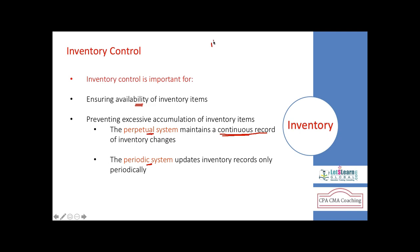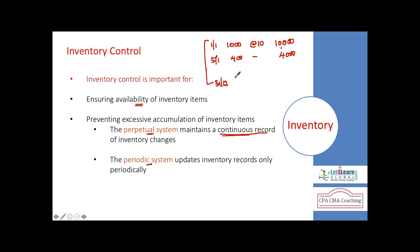For example, on January 1st we purchased 1,000 units at $10 each — cost of purchase is $10,000. On January 5th we sold 400 pieces, so we reduce $4,000. The entire history is maintained this way, so you know both the inventory quantity and value as of the closing date. This is called the perpetual inventory system.